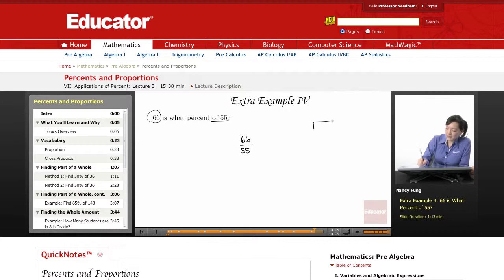It's like a fraction, so we can divide the numerator by the denominator and create a decimal. 55 goes into 66 once.